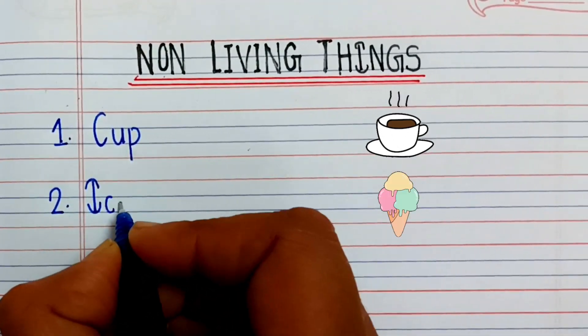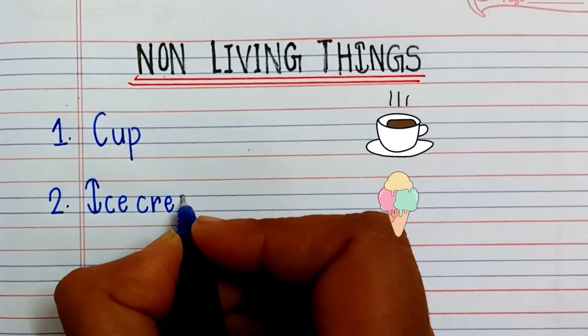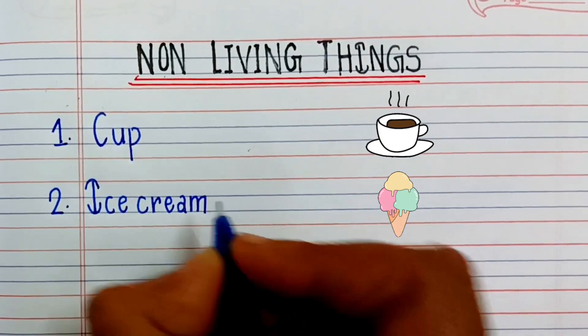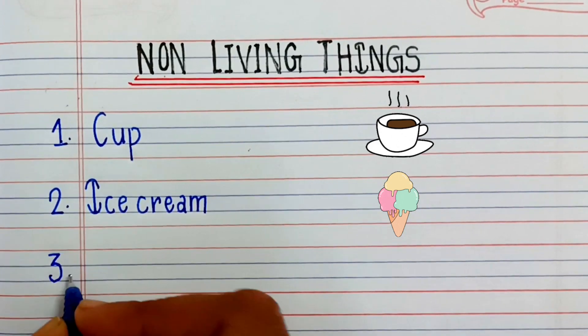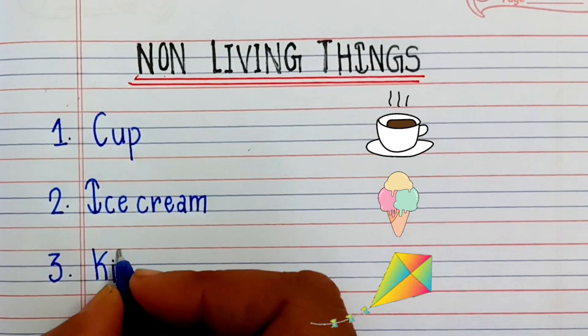Second one is ice cream. I-C-E-C-R-E-A-M. Ice cream. Third non-living thing is kite. K-I-T-E, kite.